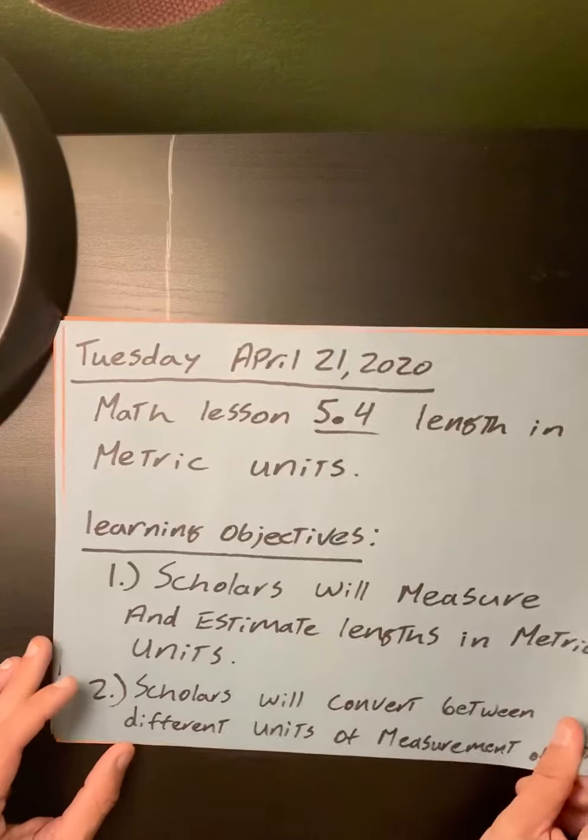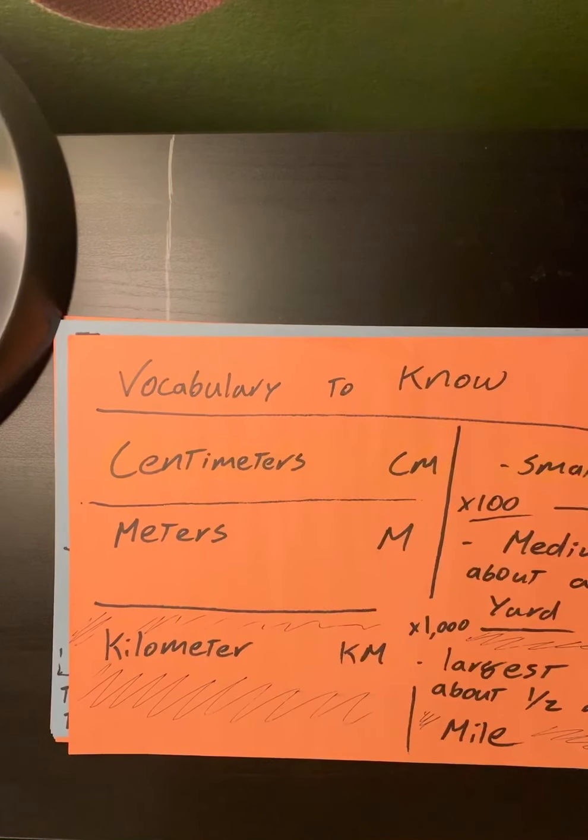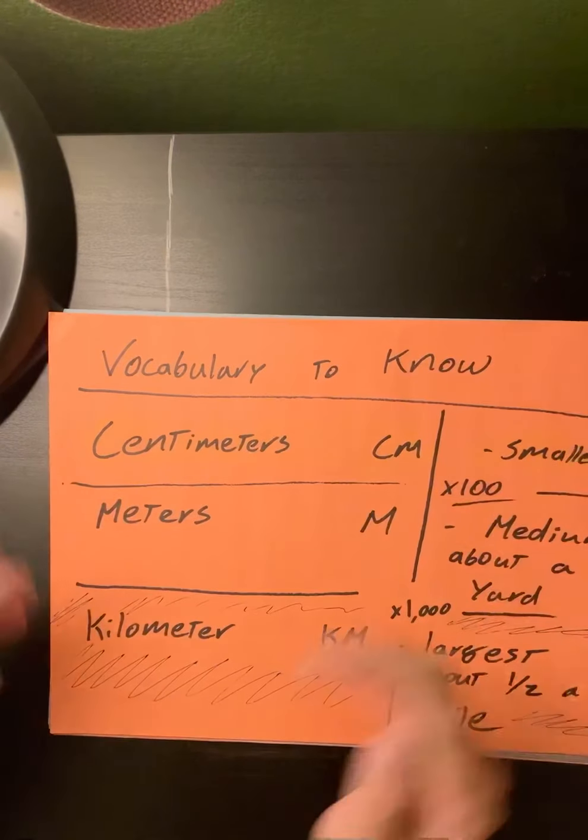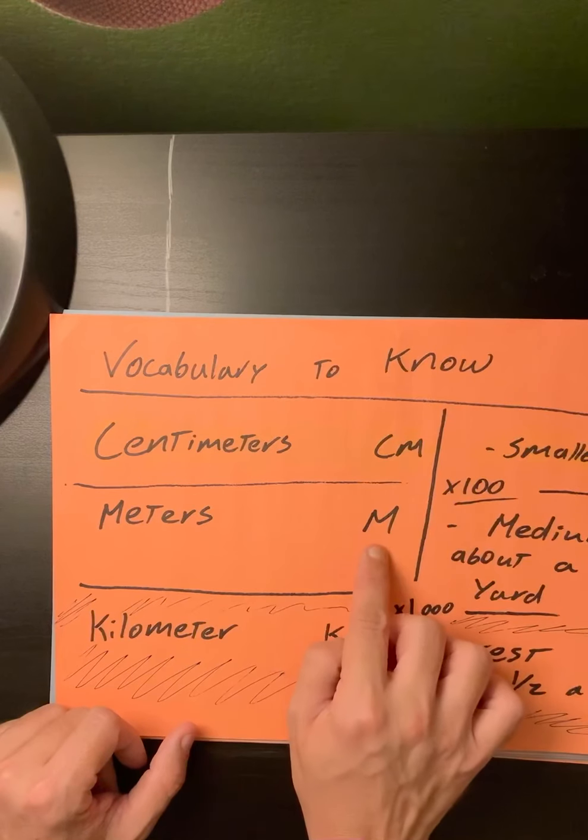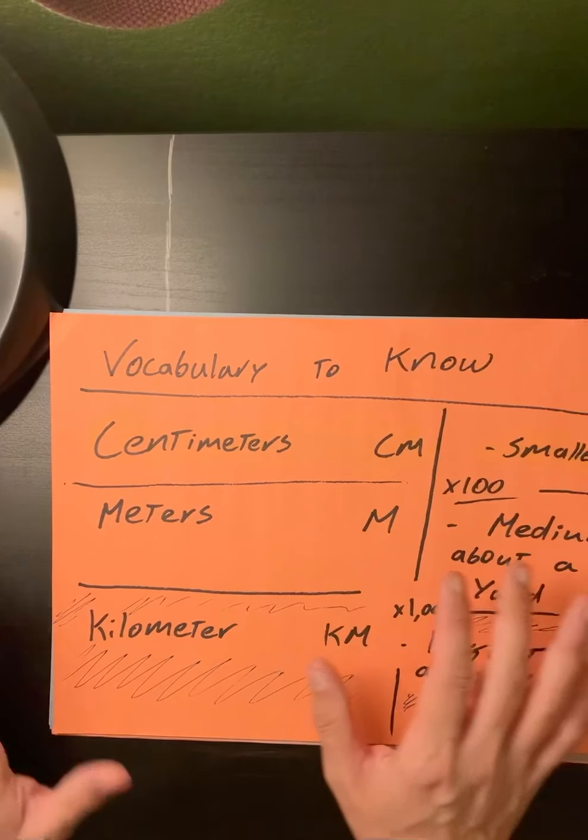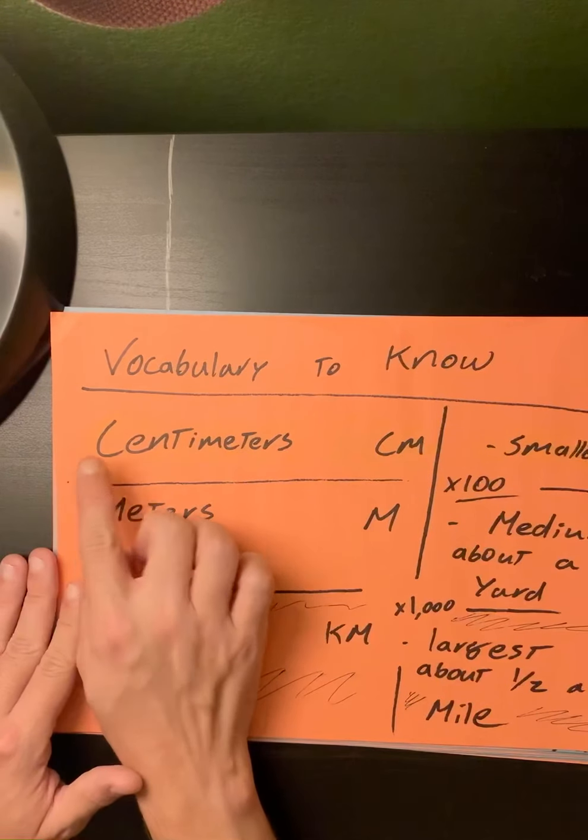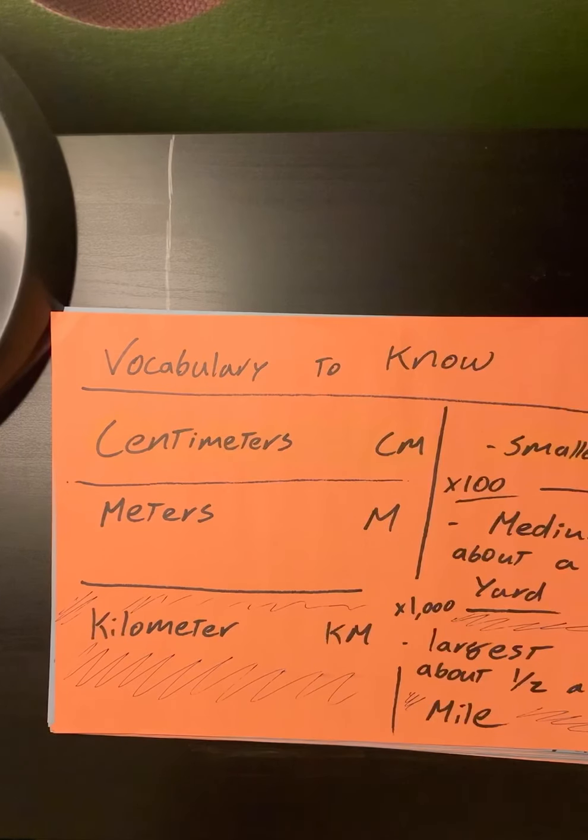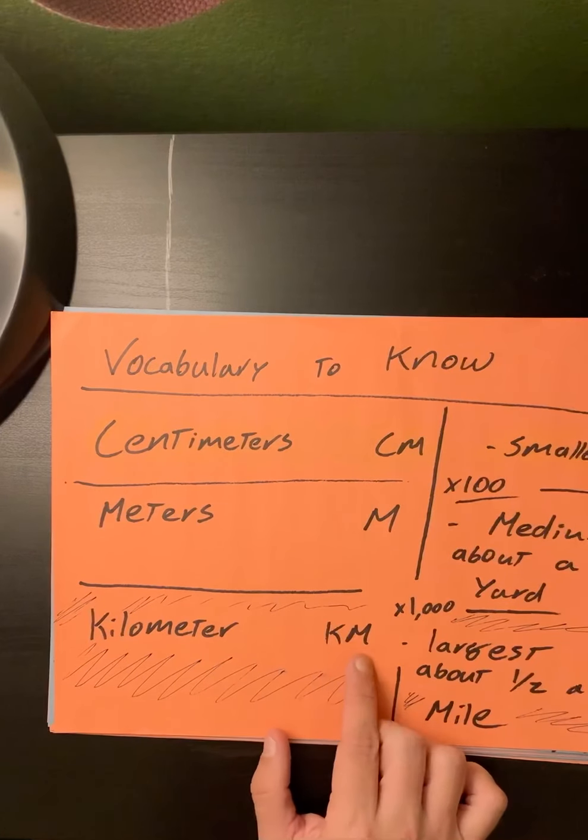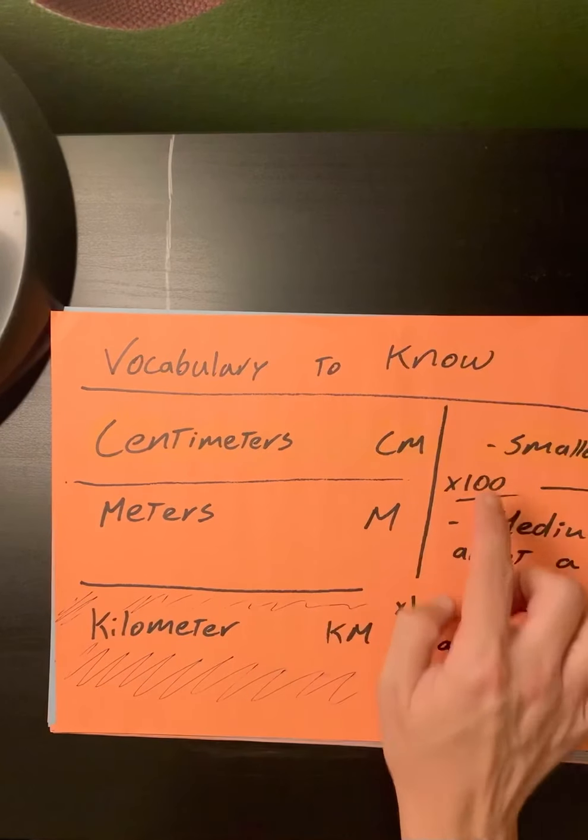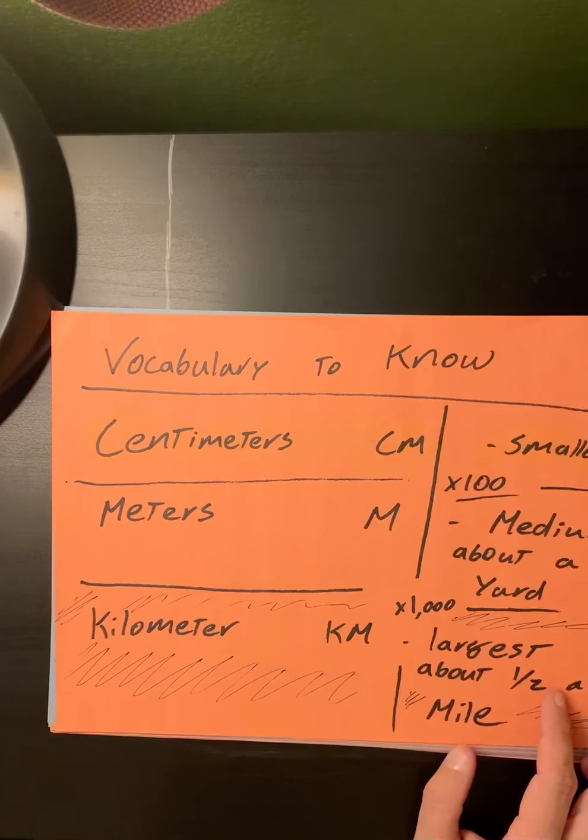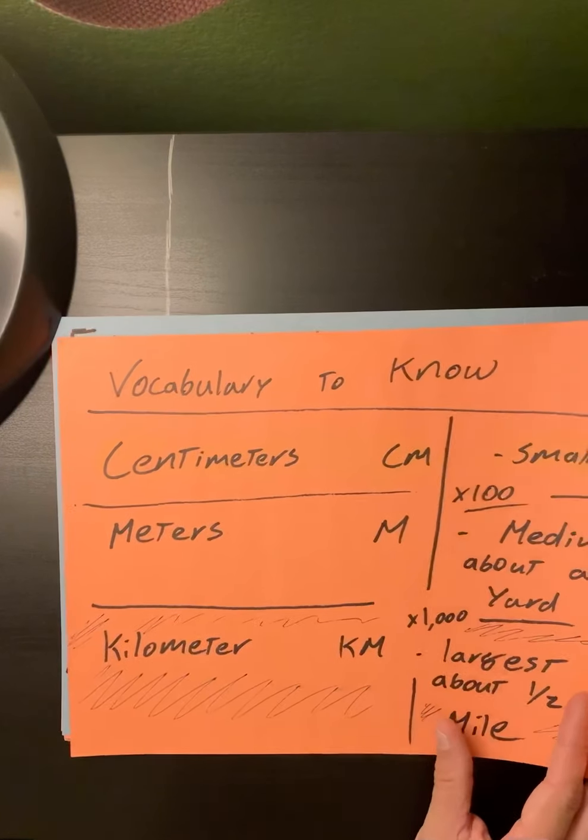For today's lesson we have some vocabulary to know. We have centimeters, which will be represented as cm, that's our smallest unit of measure for length. We have meters, which is represented by an m, that's our medium, and meters are about the length of a yard. A kilometer is our largest unit of measure, represented by km, and that's a thousand meters or 100,000 centimeters. Kilometers are about roughly half a mile.